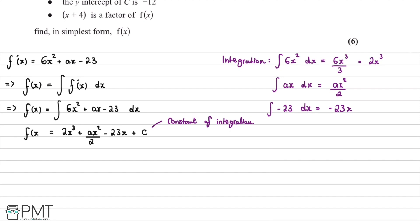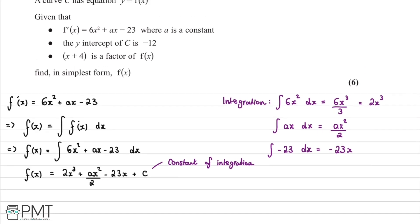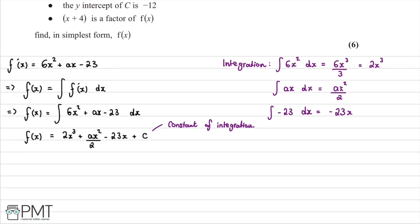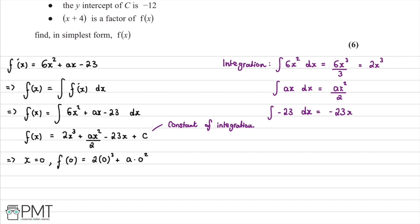Now we use the second piece of information: the y-intercept of C is negative 12. The y-intercept occurs when x = 0, so we substitute x = 0 into f(x). We have f(0) = 2(0)³ + a(0)²/2 - 23(0) + C.